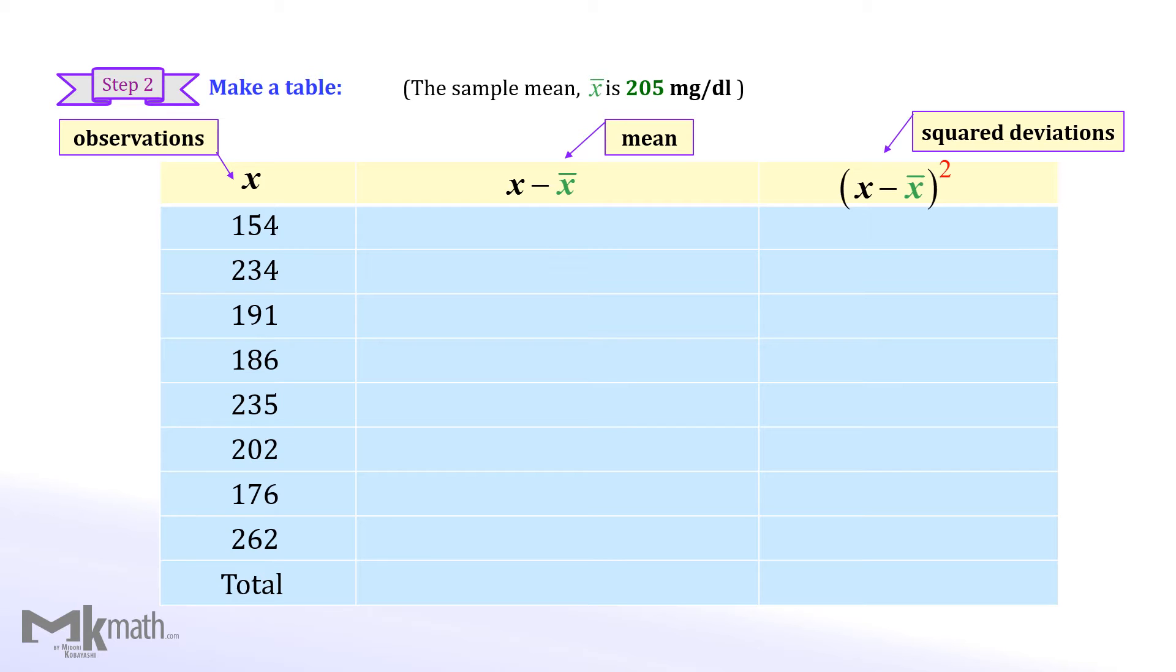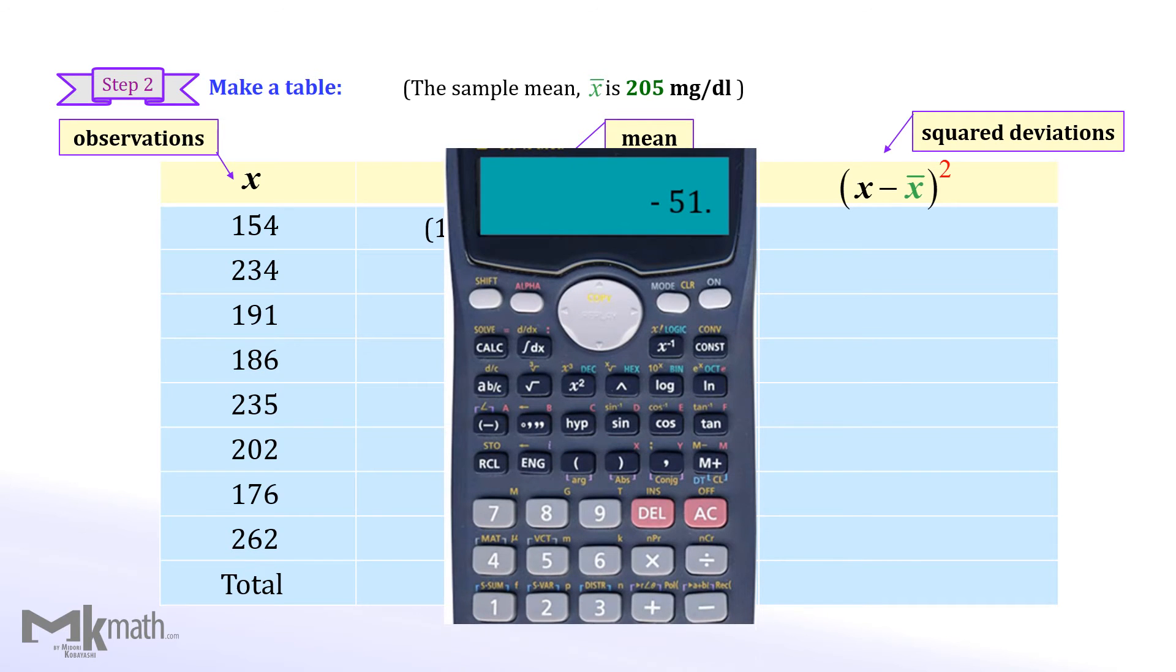For the first observation 154, 154 minus 205 to get the negative 51 deviation from the mean. Keep this value on your calculator, then place the square key to get the squared deviation as 2601.